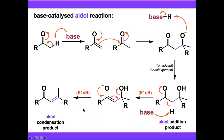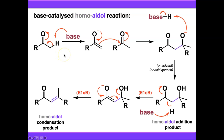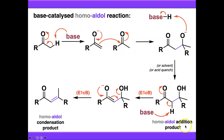Depending on the nature of your substrates and the reaction conditions you could form one or either of these or a mixture of both. You'll notice in this mechanism that the electrophilic carbonyl we used looks very similar to the carbonyl we enolised at the start. If that's the case, we call this a homoaldol reaction — where both the enolised carbonyl compound and the electrophilic carbonyl it reacts with come from the same compound, giving a homoaldol addition product and a homoaldol condensation product.